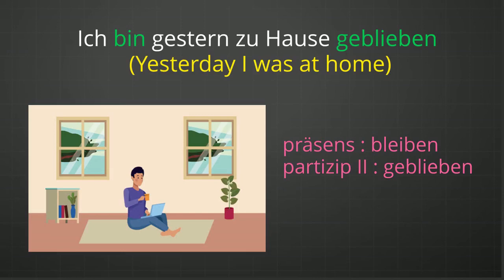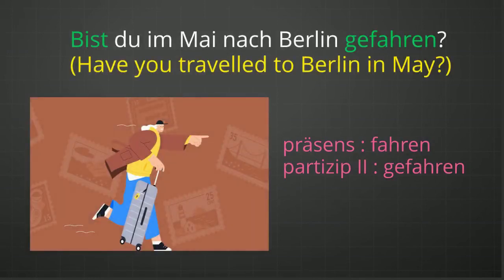"Ich bin gestern zu Hause geblieben." Geblieben is the Partizip II form of the verb bleiben. Geblieben is a special verb which has to be used with helping verb Sein, and that is why the conjugated form of Sein is at second position and geblieben is at the end of the sentence. "Bist du nach Berlin gefahren?" Gefahren is the Partizip II form of the verb fahren. Fahren shows a change of position and that is why Sein is the helping verb. Bist is at first position as we are writing a yes/no question, and gefahren is at the end.